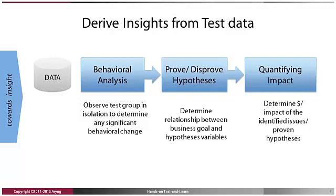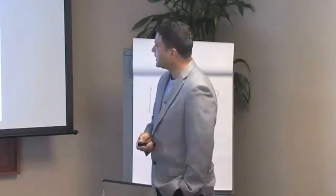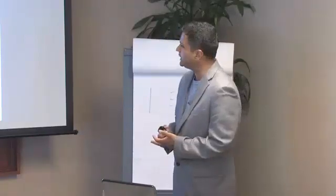The next approach is the standard one — prove and disprove hypotheses. We came up with certain hypotheses to begin with and looked at what we want to achieve, so go and validate those hypotheses: reject or fail to reject. Then there is quantifying impact. At the end of the day, if you are working for a for-profit organization, what it really boils down to is how much money does this mean — so boil it down to dollar terms.